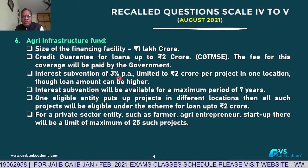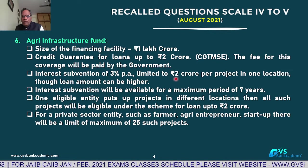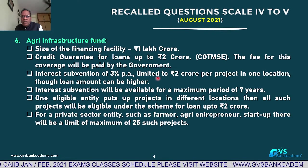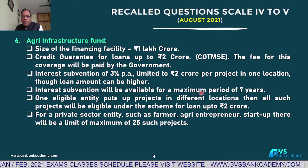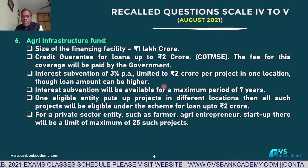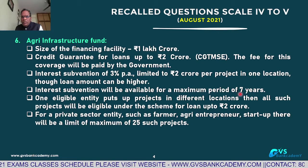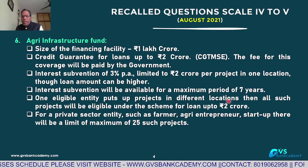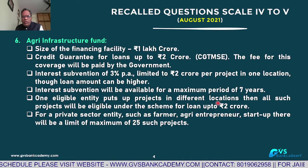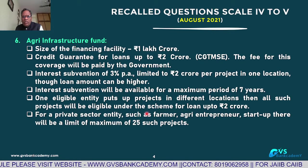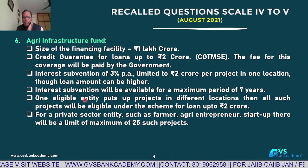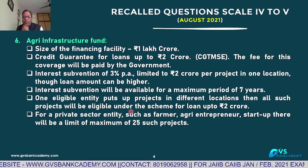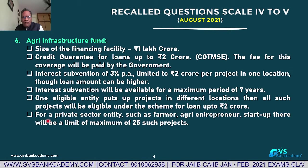Interest subvention of 3% is limited to ₹2 crores for a project in one location. If you have more locations, you get subvention accordingly. The subvention is available for a maximum period of 7 years. One eligible entity putting up projects in different locations — all such projects will be eligible under the scheme for loans up to ₹2 crores.